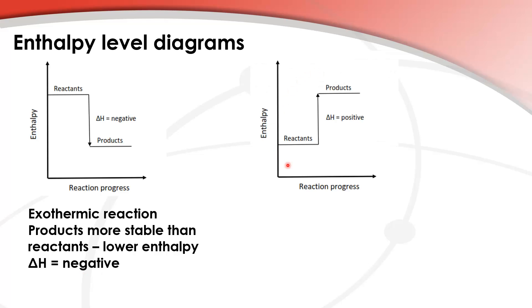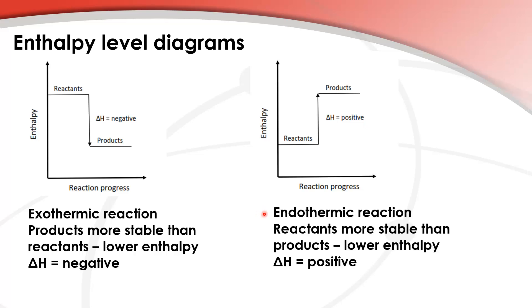Here we have the enthalpy level diagram for an endothermic reaction. As you can see, the products have a higher enthalpy than the reactants, which means the reactants are more energetically stable than the products. The delta H for an endothermic reaction is positive because heat is being absorbed. So we have an endothermic reaction. The reactants are more stable than products because they have a lower enthalpy, and delta H is positive.